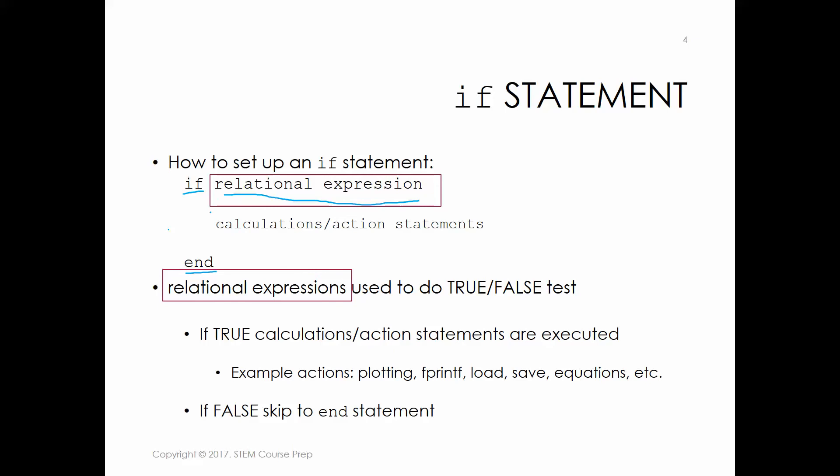Your relational expressions are used to do the true-false test. In order to get into this block of code to do these calculations, the expression has to be true. If this turns out to be false, these actions will not be taken — MATLAB will just totally skip over them, go to the end statement, and then go to the next line of code. Some example action statements: you could do plots, print out data using fprintf, generate data files, do calculations with equations — all sorts of stuff. If the expression is false, you're going to skip all of those calculations and actions and go right to end. Your actions will happen only if that statement is true.